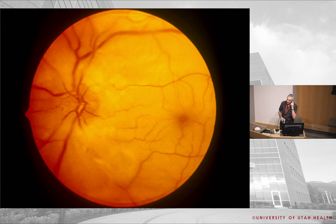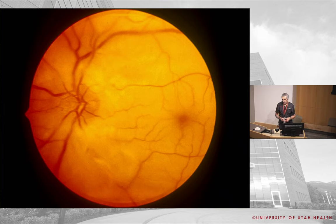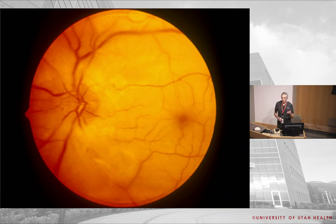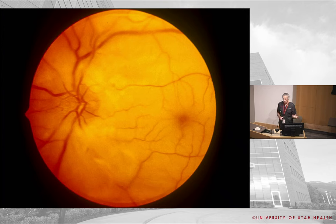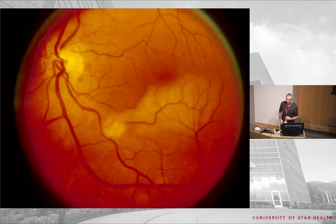What gives us the cherry-red spot? In a central retinal artery occlusion, choroidal blood flow is still intact. At the center of the fovea where the retina is thinned out, you can still see normal choroidal blood flow through, while the rest of the ischemic retina is white and pale. This is a central retinal artery occlusion.